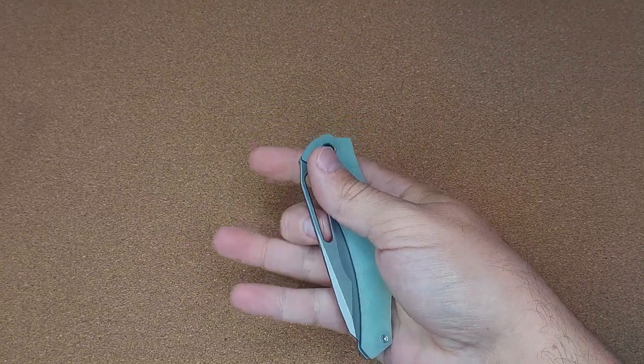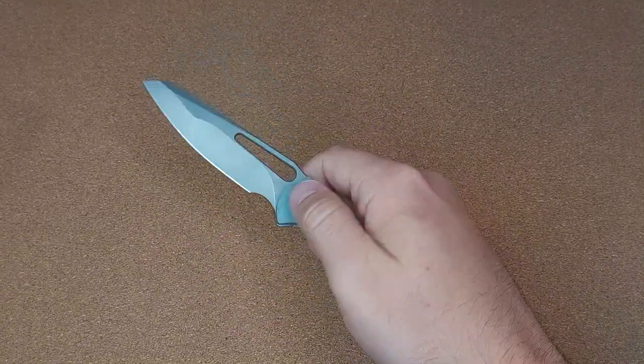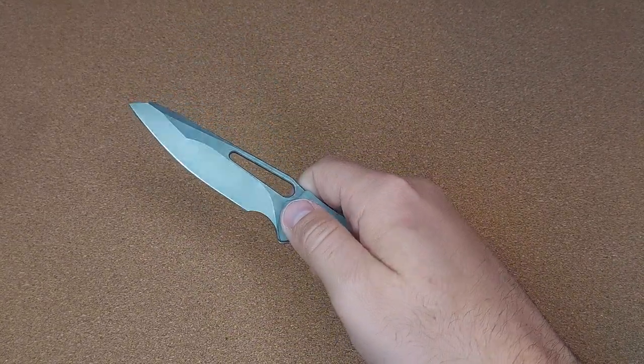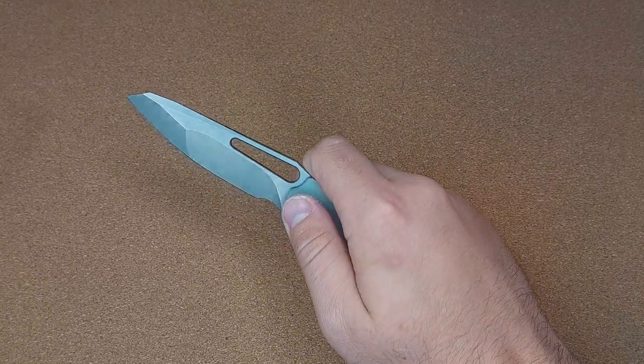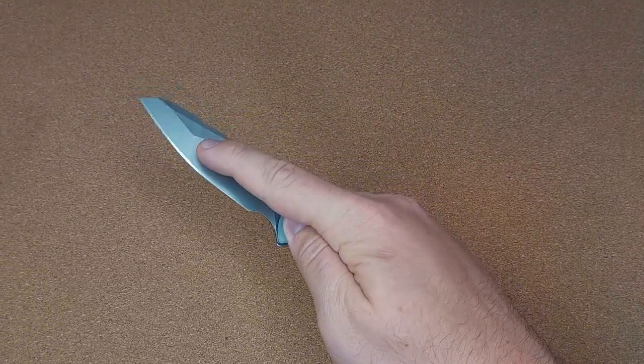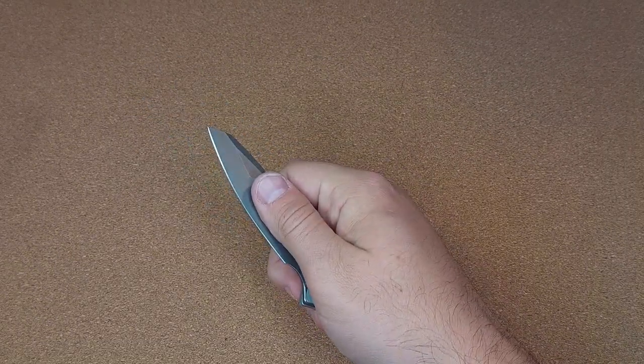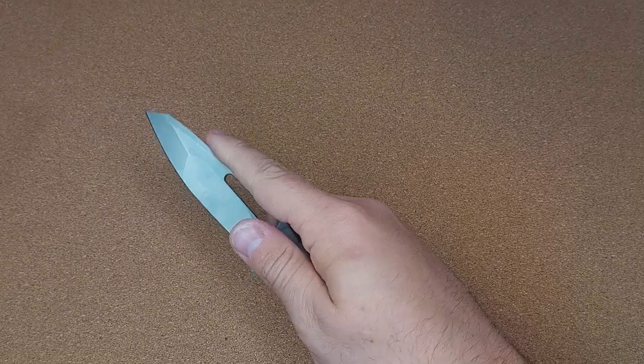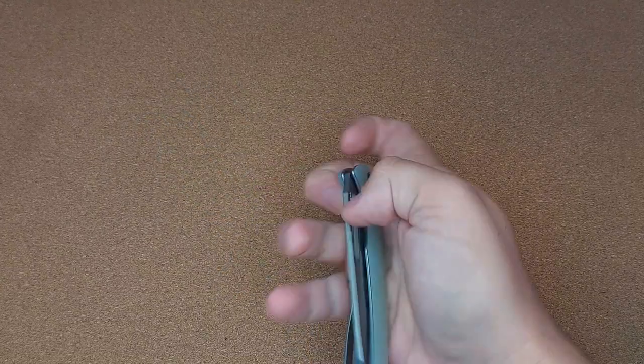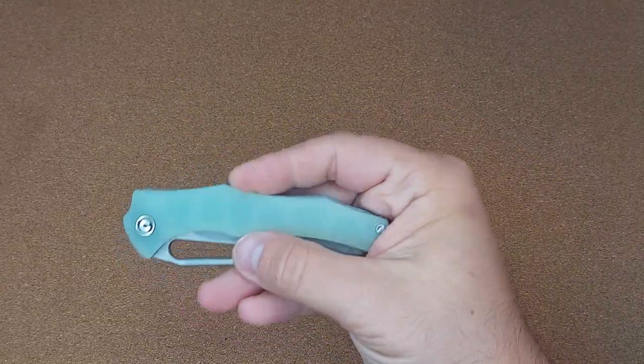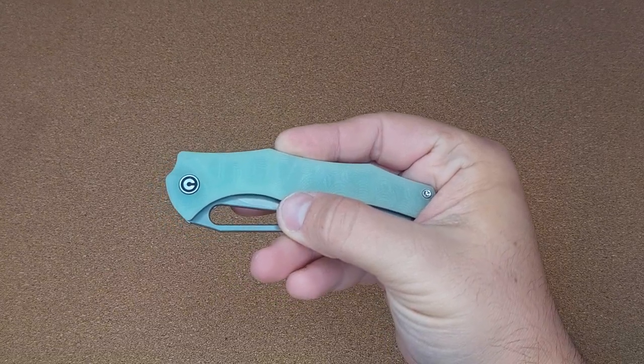It has a flat grind with a reverse tanto blade shape. I think it looks like a lot of wharncliffs too, but I think this extra grind here and the belly on the blade is what differentiates that. The handle is a natural jade g10.